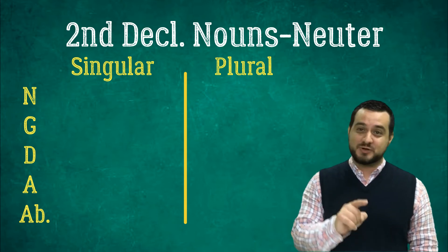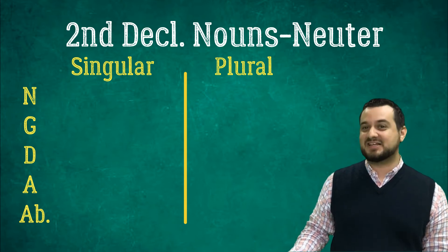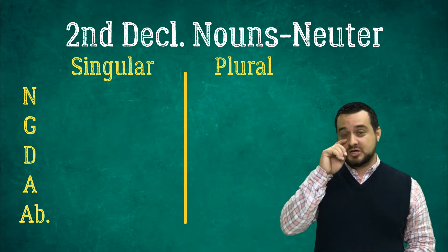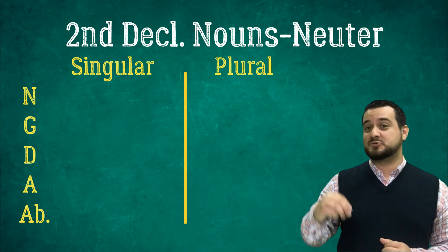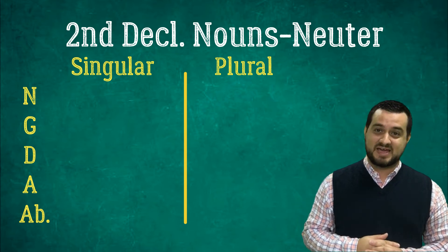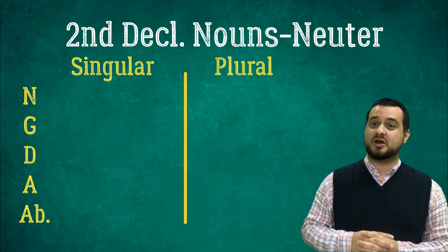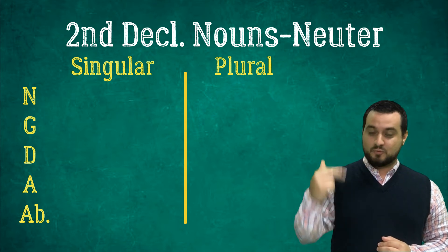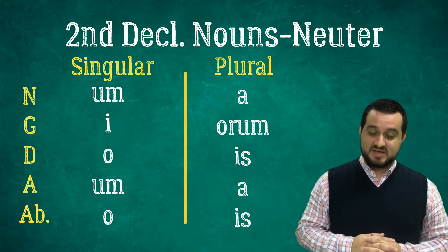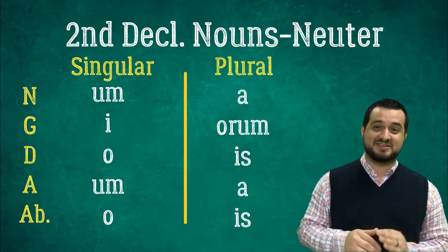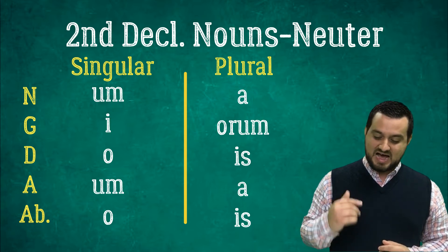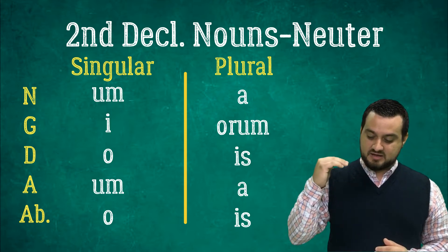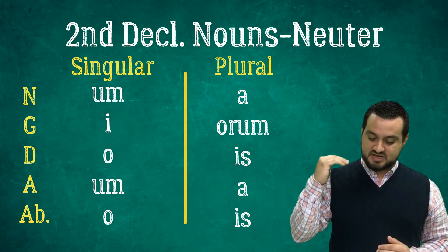Now let's move on to the trickier but similar second declension neuter noun chart. So these are second declension neuter nouns. Instead of starting with Us, it starts with Um in the nominative singular case. Let's begin. Starting with Um, and then we'll work our way down. This is second declension neuter. Um, I, O, Um, O. A, Arum, Is, A, Is.